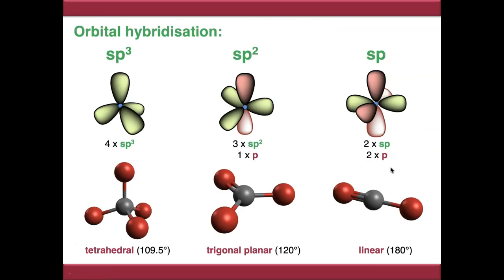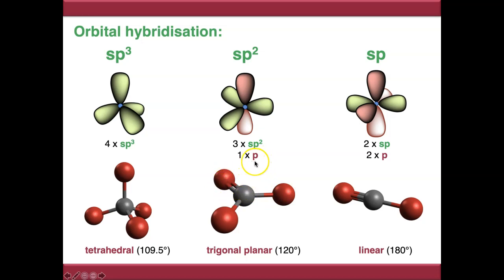To summarise, we've covered the three hybridisation modes, most commonly applied to carbon. sp3 hybridised carbon has four equivalent orbitals forming four bonds to four substituents — this is tetrahedral. sp2 hybridised carbon forms a trigonal planar arrangement between substituents, with the possibility of an additional double bond from the unhybridised p orbital. And sp hybridised carbon forms a linear arrangement with two bonds to two substituents, plus the possibility of two additional bonds from the two unhybridised p orbitals. We'll come on to those in a later video about forming molecular orbitals.